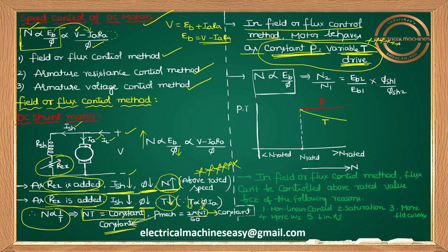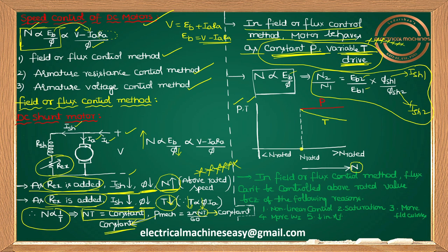For problems, remember the relation: N2/N1 = (Eb2/Eb1) × (φsh1/φsh2), where φsh1 corresponds to Ish1 before adding Rx, and φsh2 corresponds to Ish2 after adding Rx. On the power-torque vs. speed graph, the motor operates above rated speed Nrated. Power remains approximately constant, and torque varies in a rectangular hyperbola as N increases.